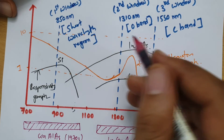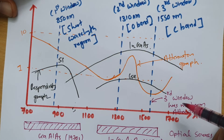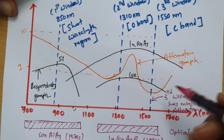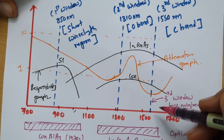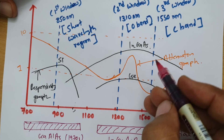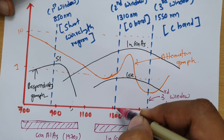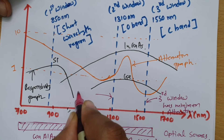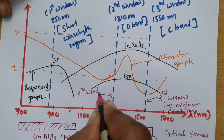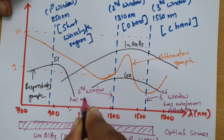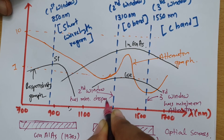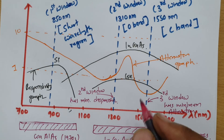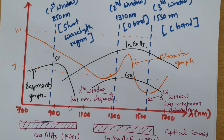Looking at the attenuation graph, attenuation is minimum at the 1550 nanometer C-band. However, the third window has a problem with signal dispersion. Signal dispersion is minimum at 1310 nanometers, meaning the second window has the advantage of minimum dispersion. This is how different windows have been utilized in optical communication.